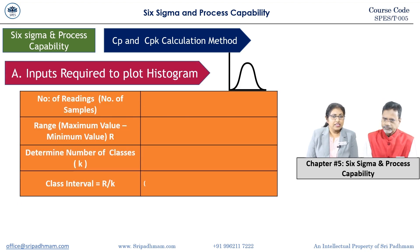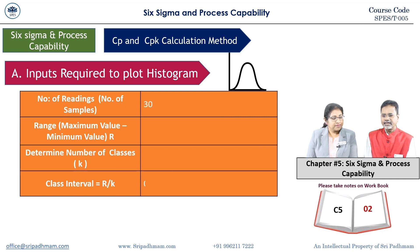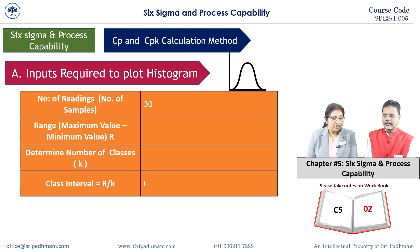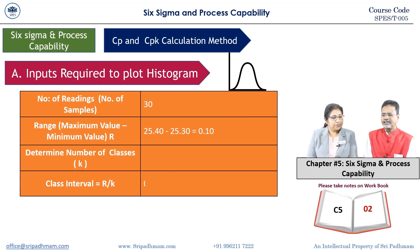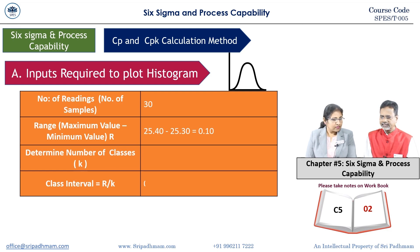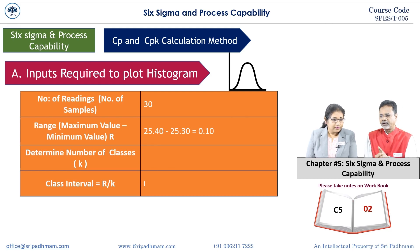Now the inputs required to plot a histogram. Number of readings, that is number of samples — minimum 30 samples. Range R equals maximum value minus minimum value. For example, 25.40 minus 25.30 equals 0.10. Range is always a modulus — it carries no plus or minus sign. Range is the difference between x-max and x-min, which is 0.10.